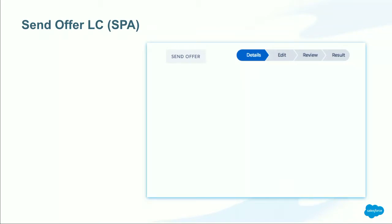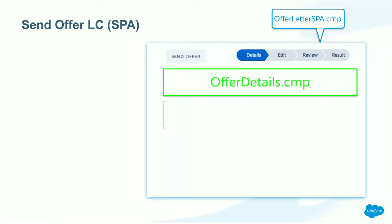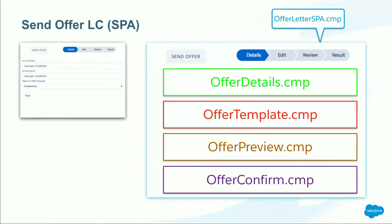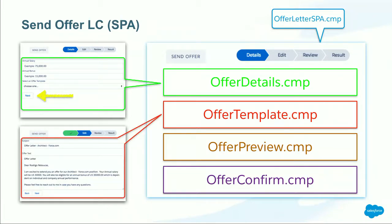Our Send Offer Lightning component SPA has a parent Lightning component called offer_letter_SPA.cmp. This parent holds the Send Offer label at the top and the progress bar. Inside this parent, we create four different child Lightning components at different times, or we make them visible. When our parent component first loads, we display the Offer Details child component inside the parent. When the user clicks Next, we hide that first child component and unhide the second child component. You may be wondering how only one of them is visible at a time — let's look at the code.